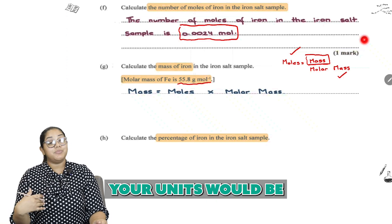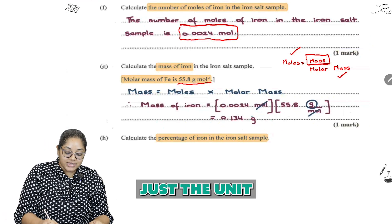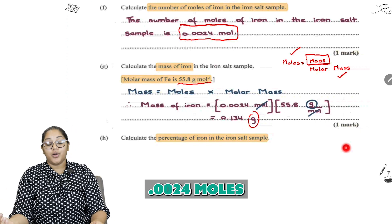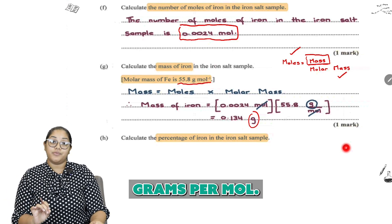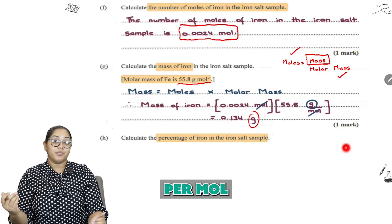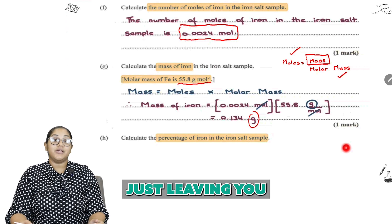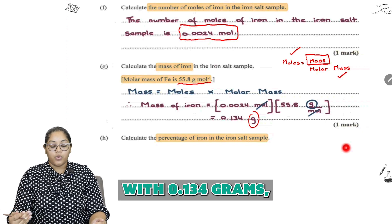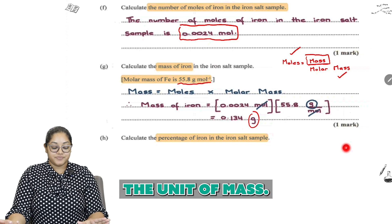So go ahead and substitute your values and see if you guys can come up with the mass. Remember, your units would be important as well. So I'm showing you guys how we ended up back with just the unit of grams alone. So we have the 0.0024 moles multiplied by 55.8 grams per mole. Remember, the units of molar mass is grams per mole. So your moles cancels out with each other, just leaving you with grams alone. So this is how you end up with 0.134 grams, which is the unit of mass.